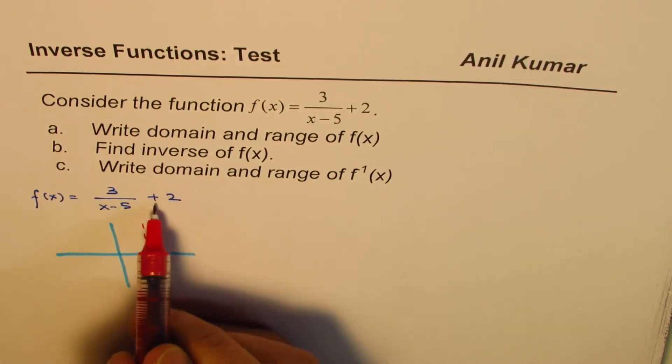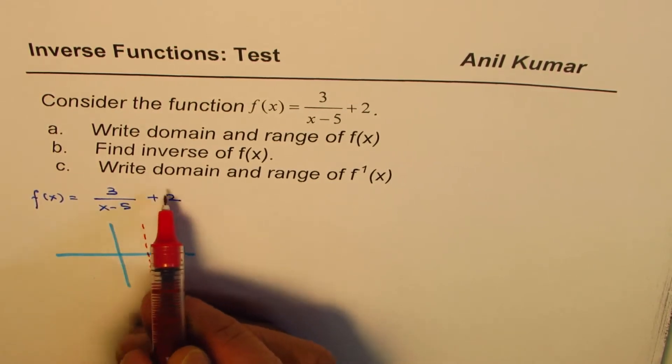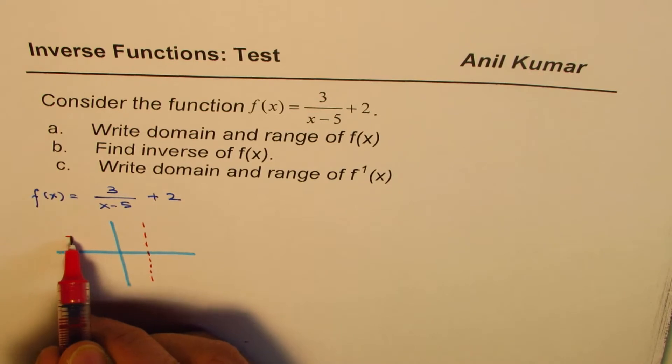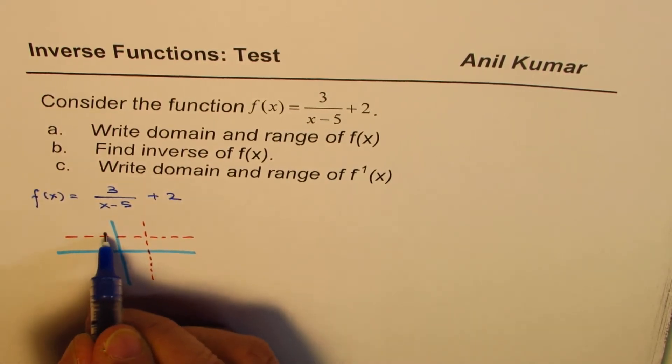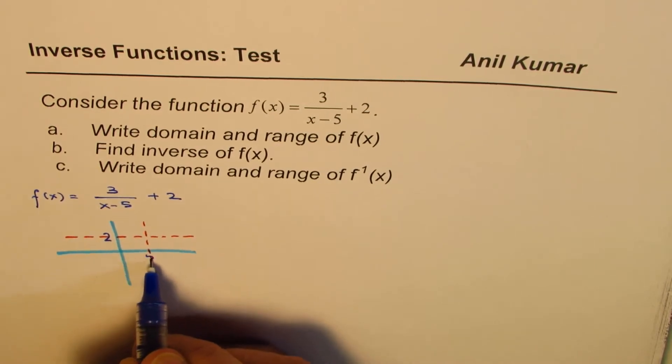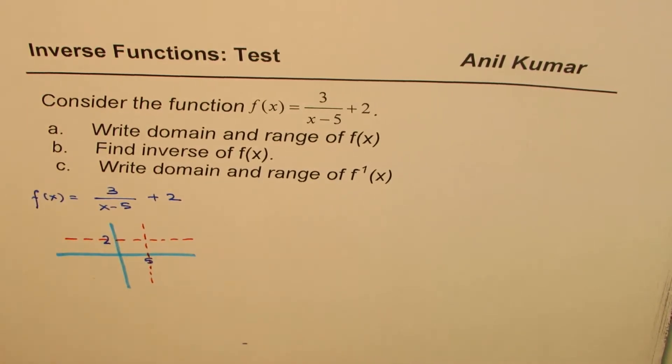So let us say this is at 5. And then plus 2 means 1 over x is moved 2 units up. So approximately, we can say this is my y equals to 2. So what we have here is 2 and this is 5, the vertical and horizontal asymptotes.